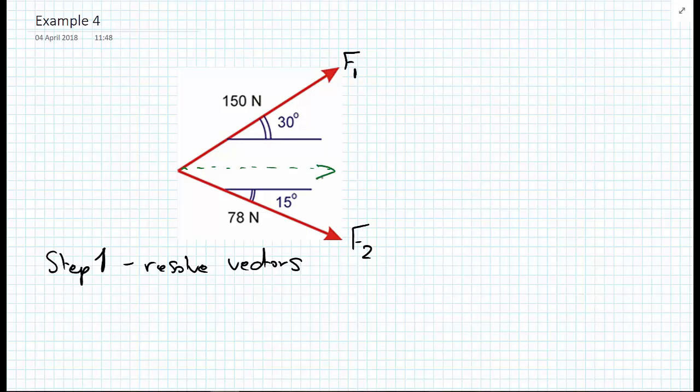This vector here and this vector here—the horizontal component, I'm going to call F1x, and the vertical component, I'm going to call F1y. Similarly, for the F2 vector.